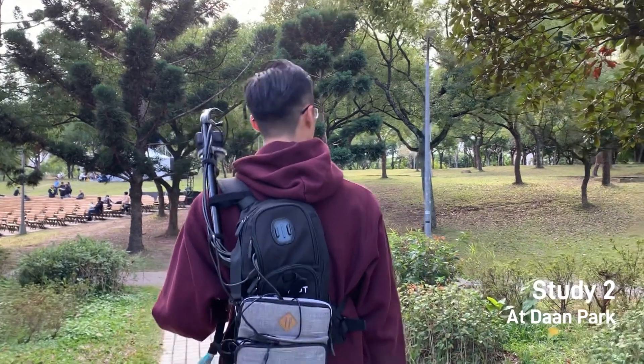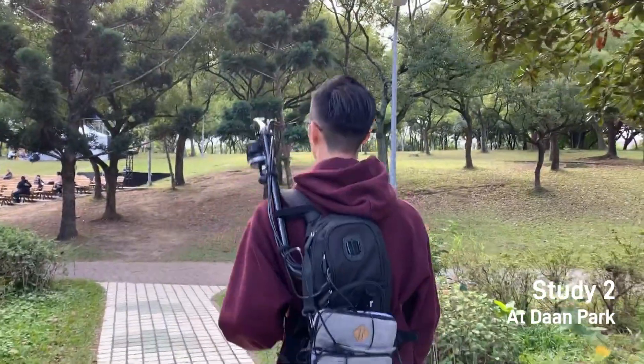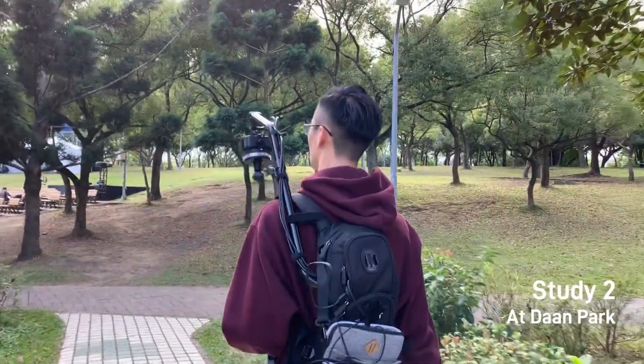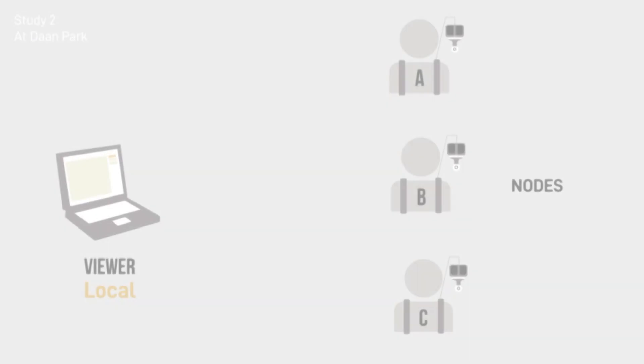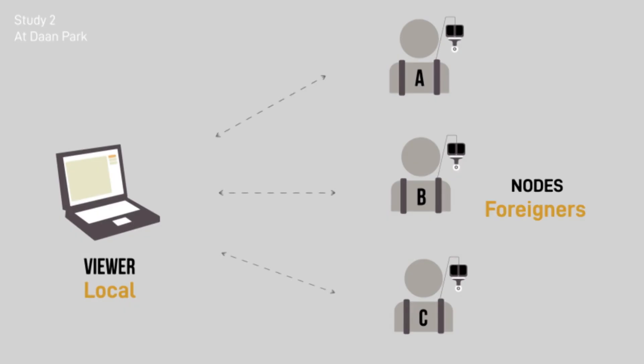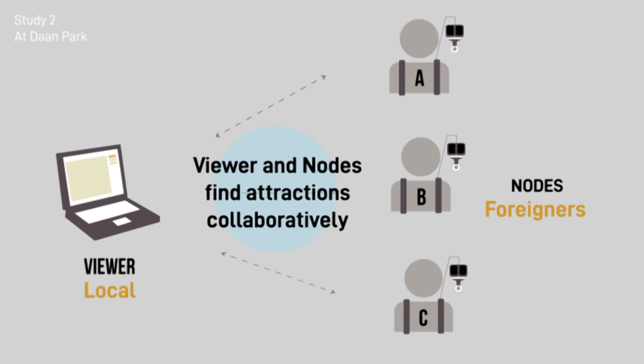In Study 2, viewer and nodes collaboratively find three objects in a diamond park. Both viewer and nodes are not familiar with the place, but the viewer can speak the local language.